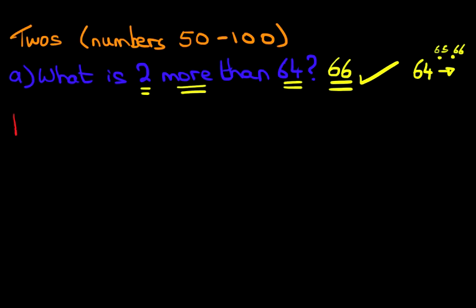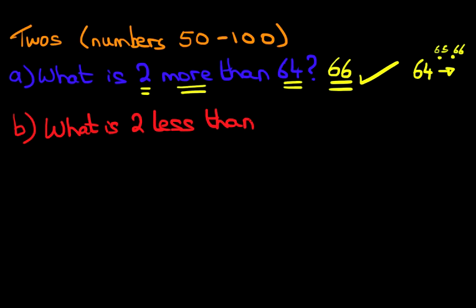Let's look at the same question, but we are going to do this one as less than. What is 2 less than 64? So again, what number are we looking at? It is 64. Let's write that down. Now are we going to count forwards or backwards? The question says less than, so therefore we are going to count backwards.